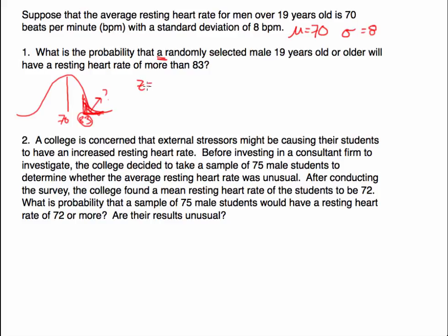I am talking about the population — I am selecting this individual from the population. So our z-score can be calculated as 83 minus 70 divided by our standard deviation, which is 8. So 83 minus 70 is 13, and 13 divided by 8 is 1.625, which we will round to 1.63. So this is my z-score.